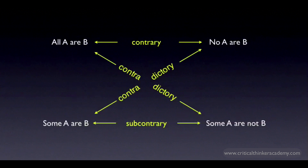At the bottom, you have what are called subcontraries. Can you guess what this is? Well, as the name suggests, it's a contrary relationship — but in this case, the two claims can both be true at the same time. They can't both be false. That's the opposite of a contrary, so it's called a subcontrary.